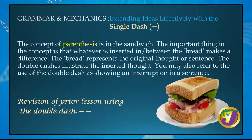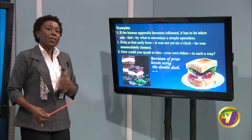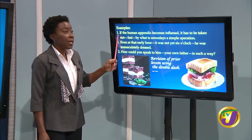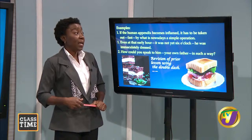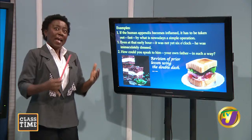You may also refer to the use of the double dash as showing an interruption in the sentence or the main thought. Here are some examples. Example one: 'If the human appendix becomes inflamed, it has to be taken out fast by what is nowadays a simple operation.' If you use the idea of the sandwich, the original sentence is: 'If the human appendix becomes inflamed, it has to be taken out by what is nowadays a simple operation.' That's the original thought — that's just the bread.